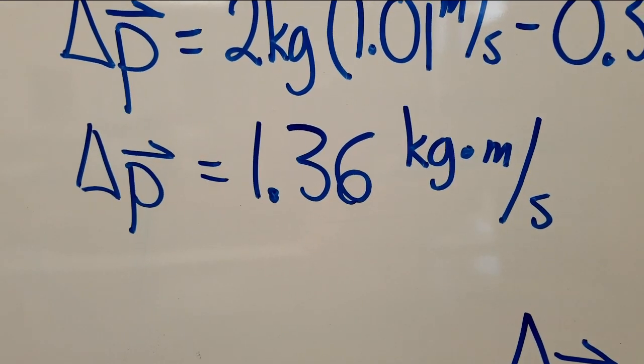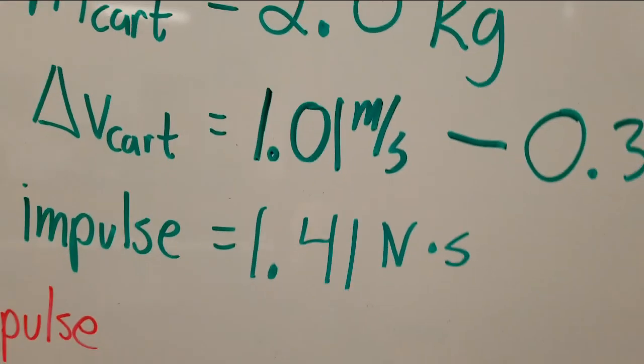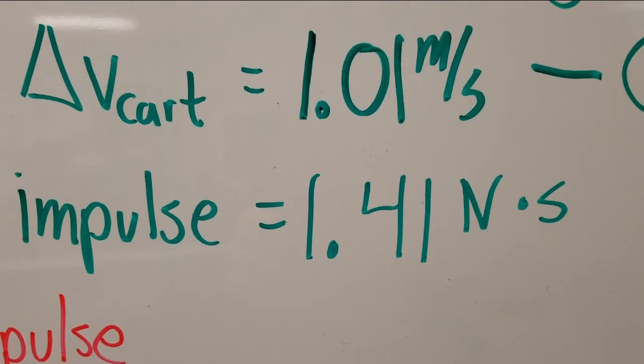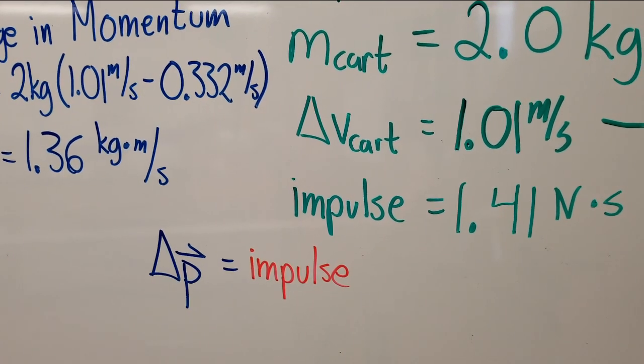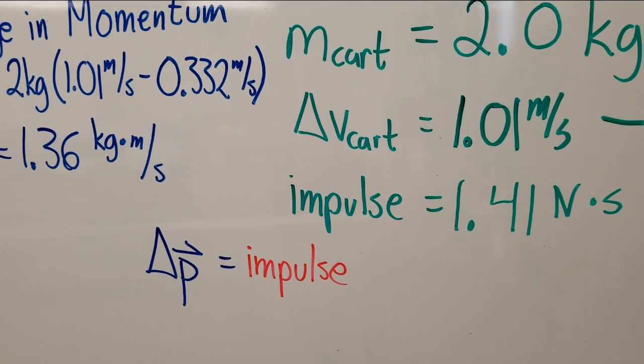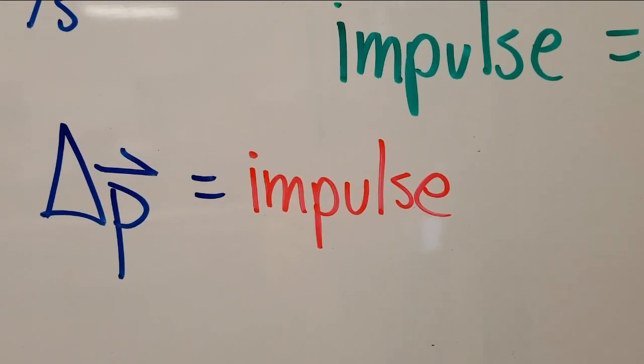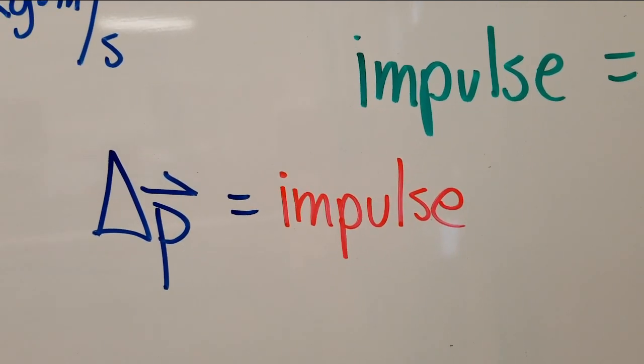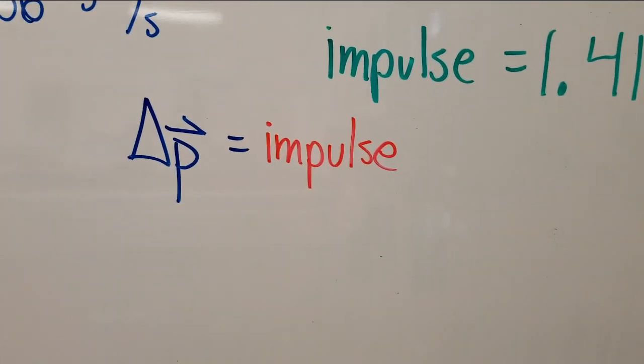What you'll notice is that that number right there, 1.4 give or take, is almost exactly identical to that number of about 1.4 give or take. Within experimental error, we're talking about 5 one-hundredths of a newton time second. We can state that the impulse is equal to the change in momentum of that cart. That is our new statement of Newton's second law, also known as the impulse momentum theorem. Impulse is equal to a change in momentum.